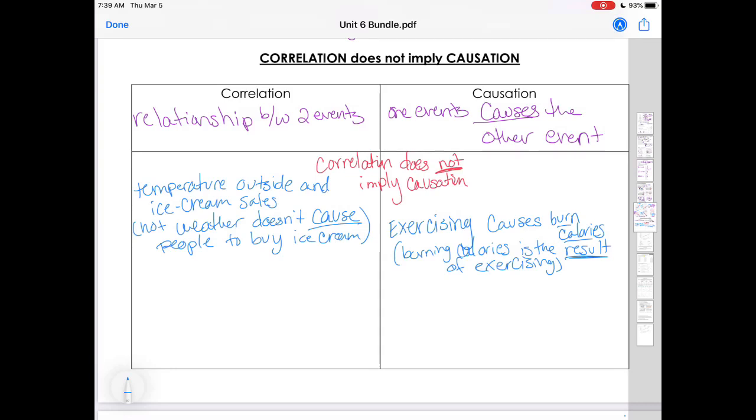Another example would be the number of firefighters and the size of the fire. The bigger the fire, the more firemen. However, this doesn't mean bringing more firemen will cause the fire to increase. If you go to a small little fire and bring 20 firemen, that fire isn't suddenly going to burn up an entire house. Yes, more firemen show up because of the size of a fire, but that doesn't mean if I bring more people the fire is going to increase. That's kind of causation and correlation.